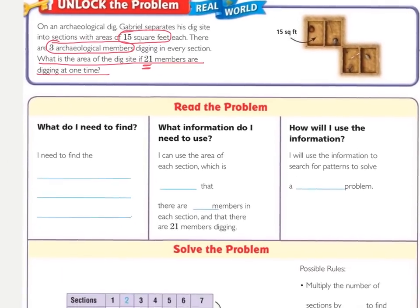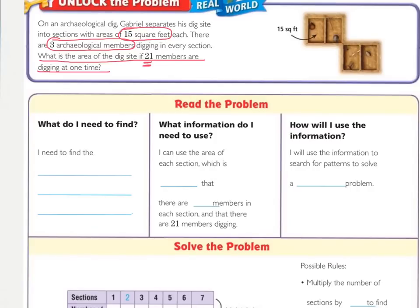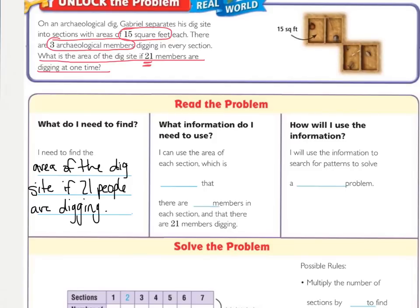Now let's fill in our sentences based on what we've underlined and circled. The first box is what do you need to find — fill that in based on what you underlined. What information do you need to use? Fill that in based on what you circled. For the first box, you need to find the area of the dig site if 21 people are digging. The information I can use: the area of each section is 15 square feet, there are three members in each section, and 21 members are actually digging.